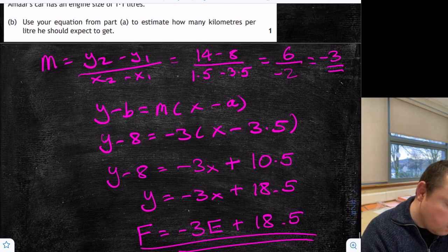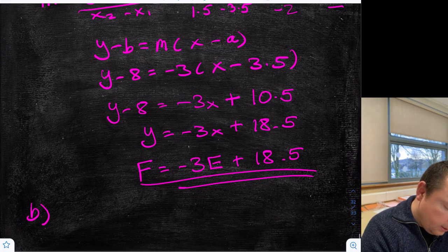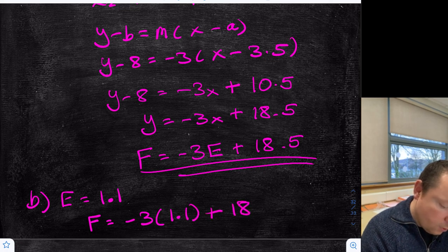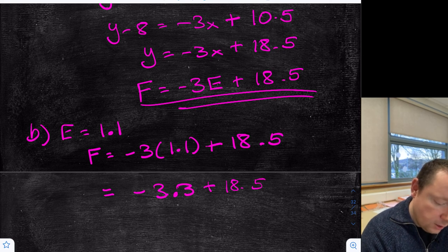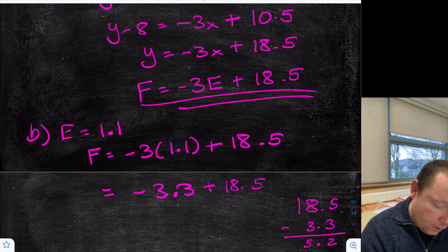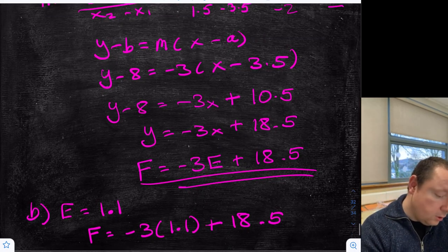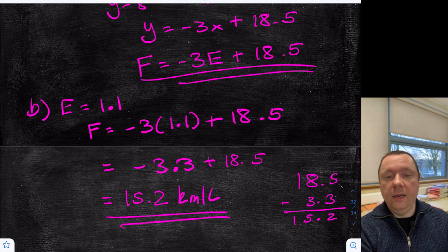Part B: use your equation to work out kilometres per litre for engine size 1.1. So E equals 1.1. F equals minus 3 times 1.1 plus 18.5, which equals minus 3.3 plus 18.5. Doing 18.5 minus 3.3: 8 minus 3 is 5 and 1, giving 15.2 kilometres per litre.